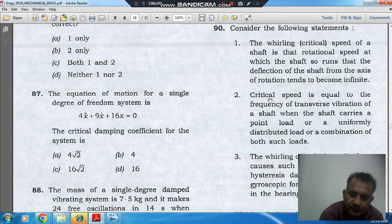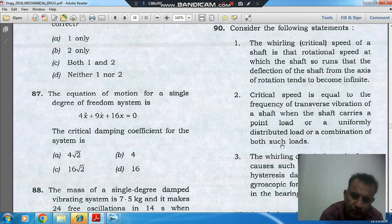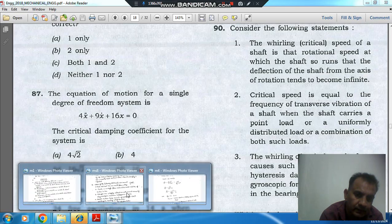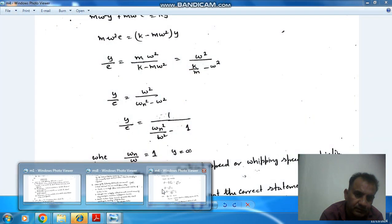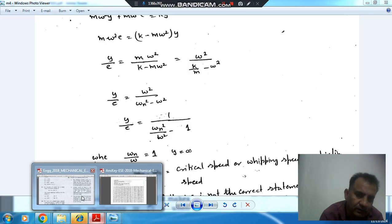Second statement is: the critical speed is equal to the frequency of transverse vibration of a shaft when the shaft carries a point load or uniformly distributed load or a combination of both of these. So that is also correct. Here the shaft carries a load of a rotor and its frequency becomes equal to the speed of the shaft. So that statement is also correct.